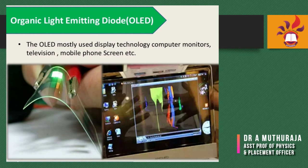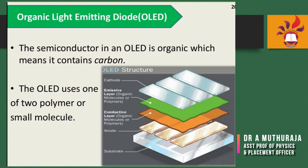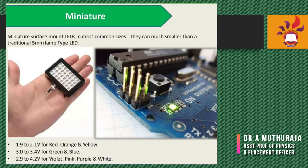OLED is mostly used in display technology for computer monitors, televisions, and mobile phone screens. Samsung and Motorola have both introduced OLED mobile phones currently available in the market. The OLED semiconductor is organic, which means it contains carbon. The OLED structure is like a sandwich, with a substrate and cathode on the top portion. OLED uses one of two types: polymers or small molecules — it is truly the latest technology for the future of electronics.